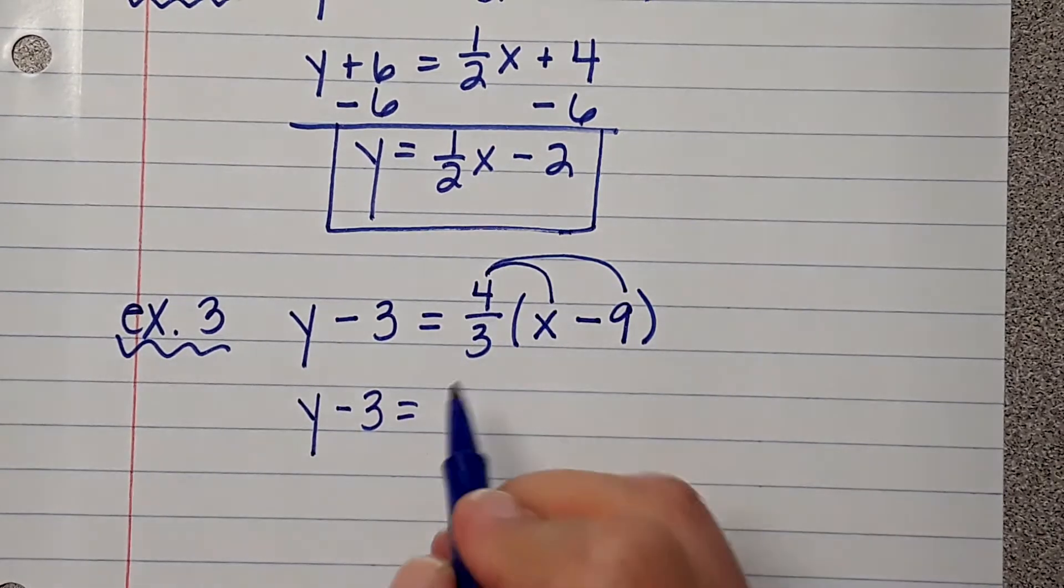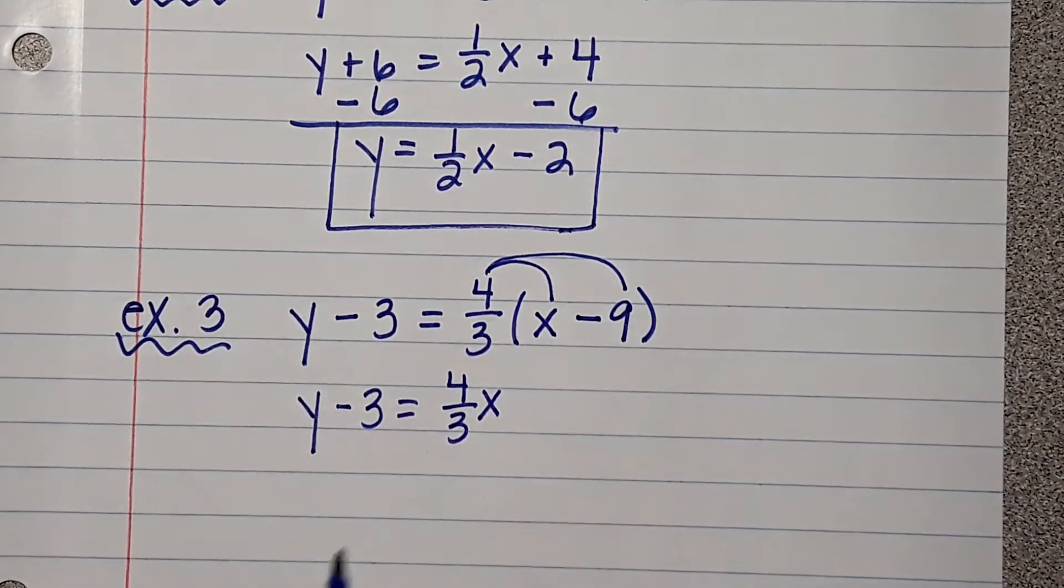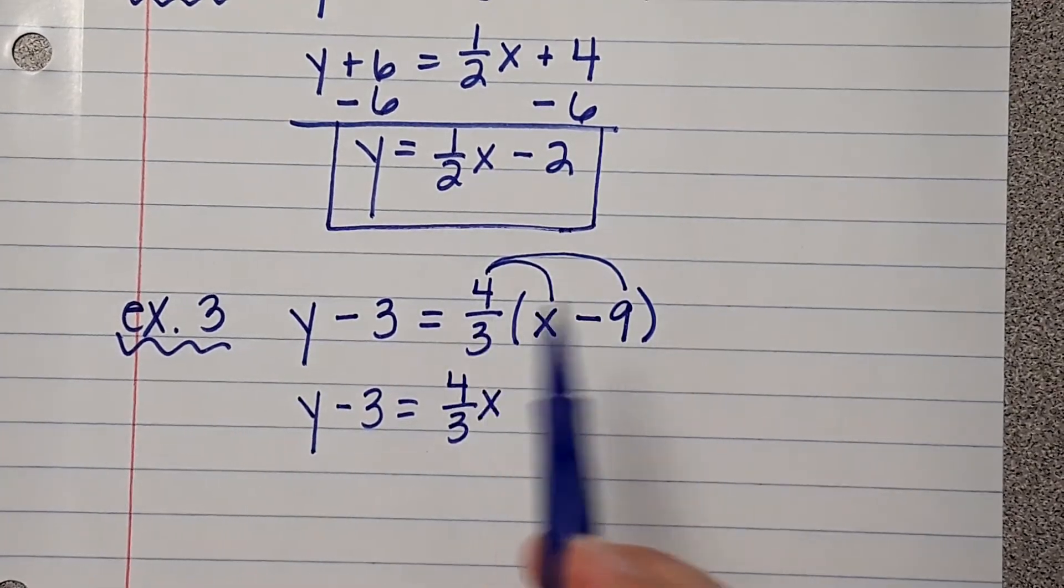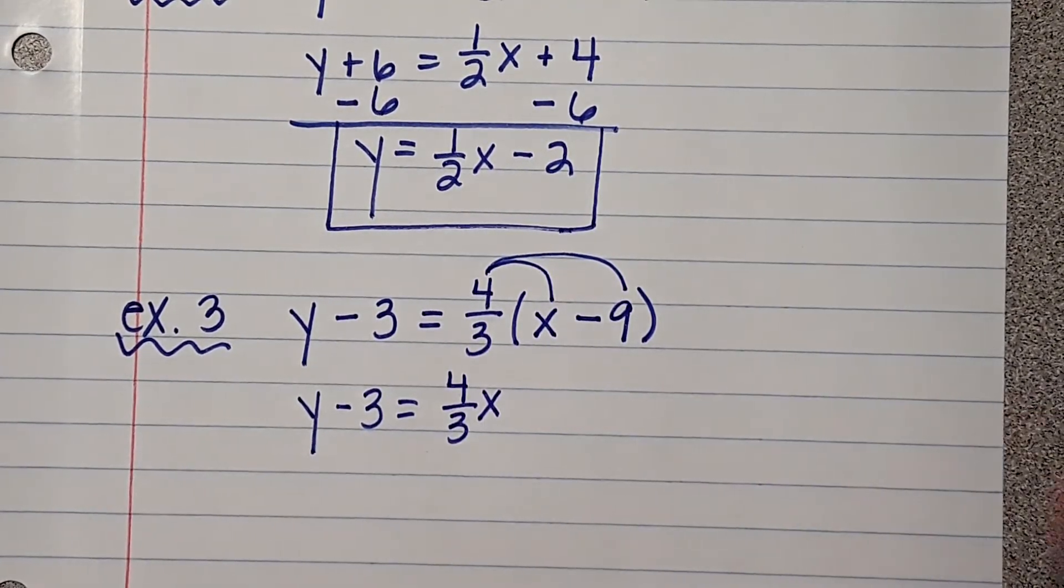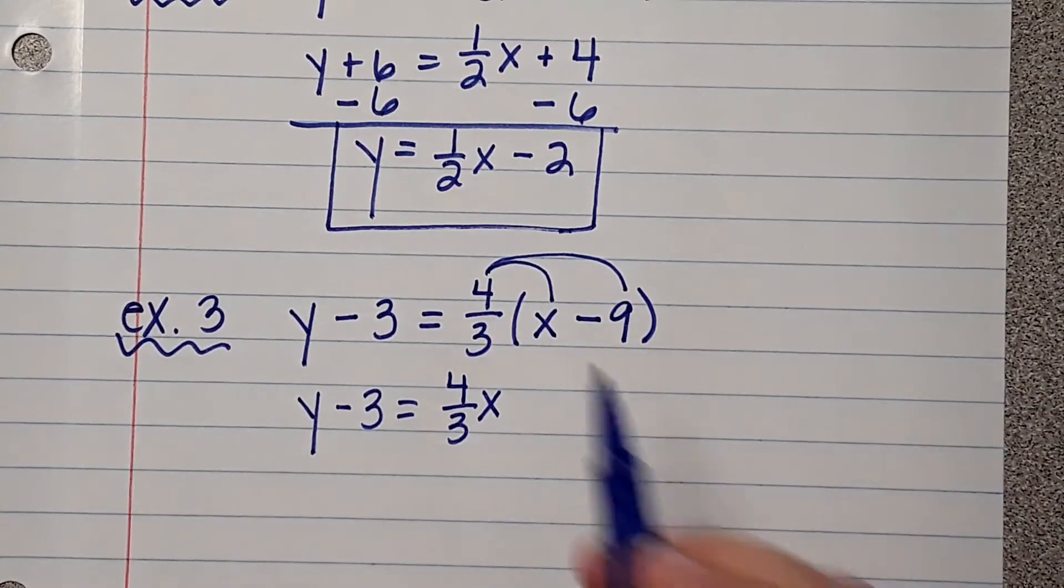Now, 4 thirds times X is 4 thirds X. And you just put that X in the middle. Now, when you go to multiply fractions, let me show you something that you can do. Okay.